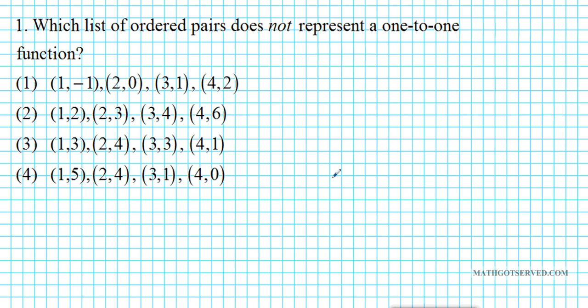Let's take a look at problem 1. It reads which list of ordered pairs does not represent a 1 to 1 function. Based on the way this question is structured, all these ordered pairs are functions. How do we know? There are no repetitions on the x's for functions. But we're asked for which of these is not a 1 to 1 function. 1 to 1 is a special kind of function where every input is assigned to exactly one unique output.